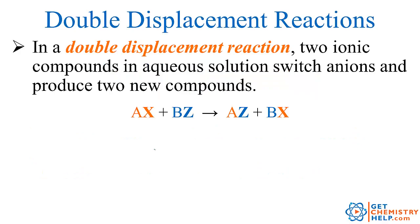Basically in a double displacement reaction, or a double replacement reaction, you have two ionic compounds, and they're normally in aqueous solution, and they're going to switch anions to produce two new compounds. In an ionic compound, the cation is the one that's written first — that's the positive one — and the anion is the one that's written second — that's the negative one.